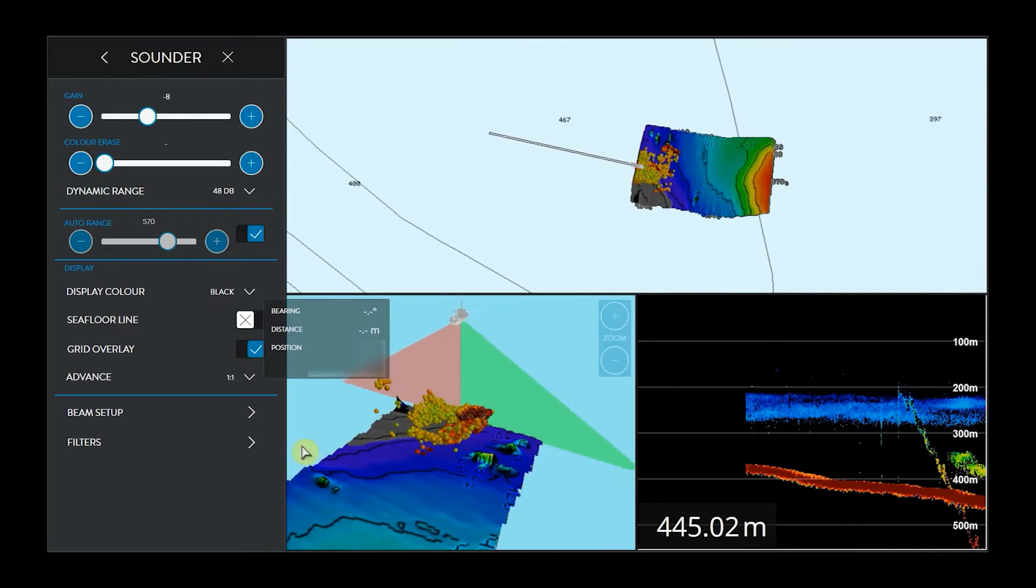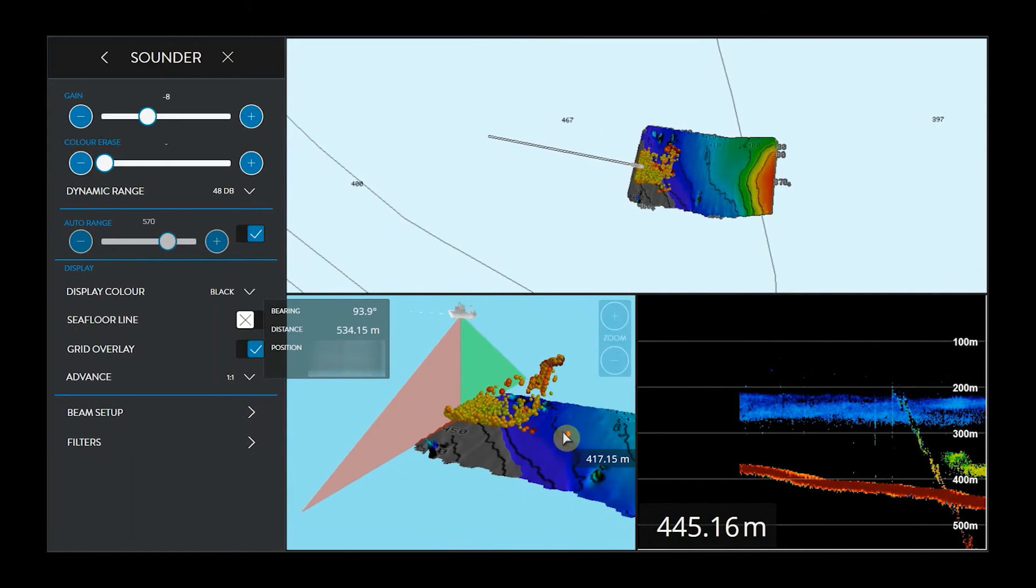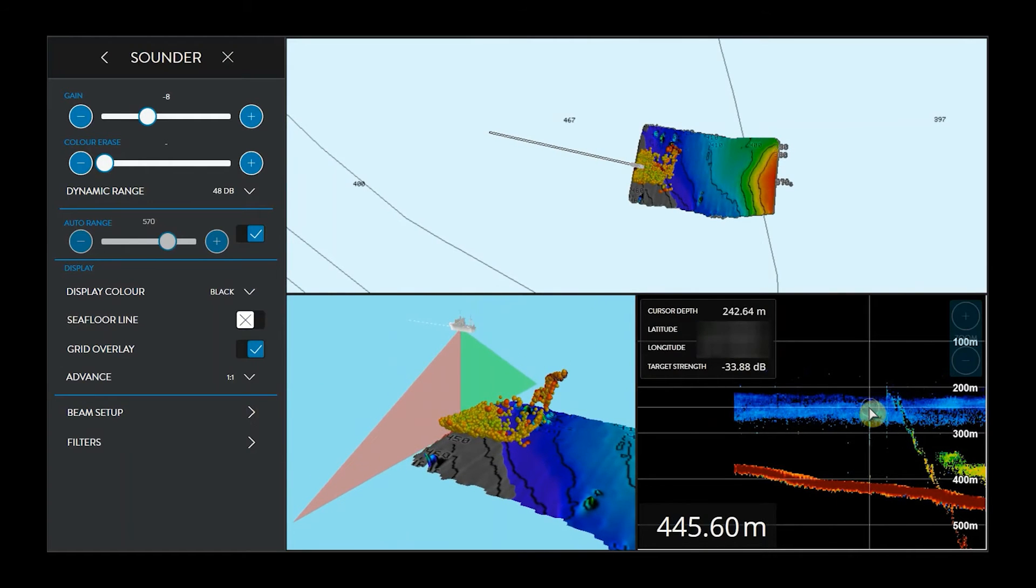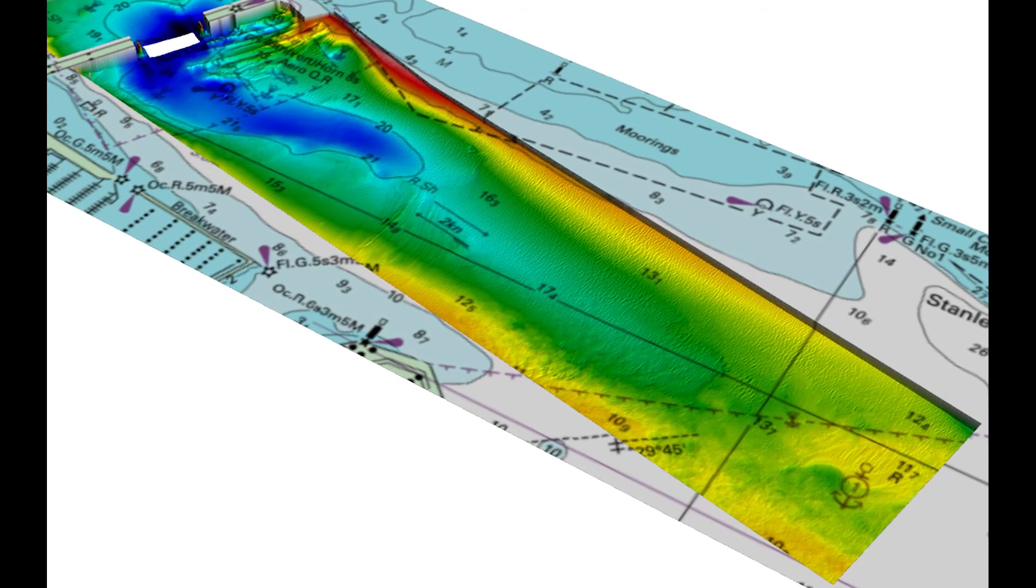We have water column targets, which means that on the 3D chart, you can also see the fish or other water column targets as discrete returns with target strength. So you can see how large or how strong those returns are on those water column targets. We also support various licenses for exporting our data into different formats. This is used where we're working with third party software, which requires different formats.